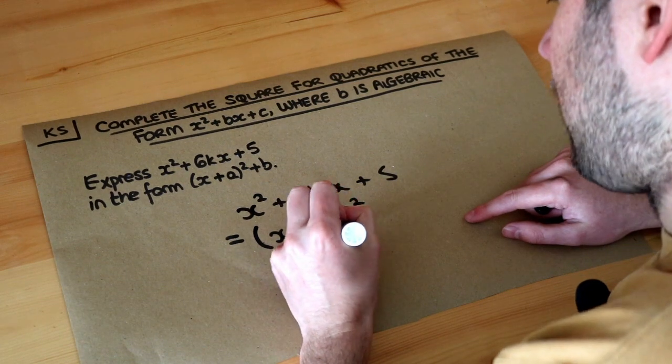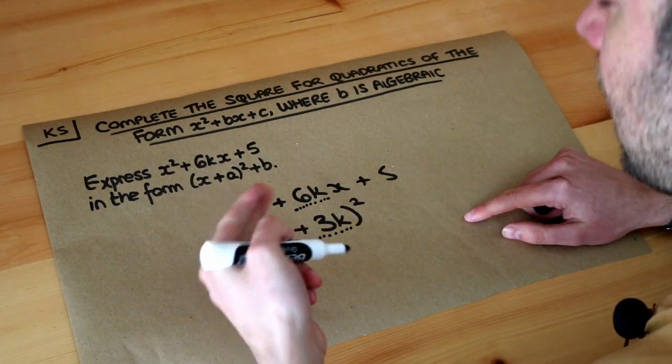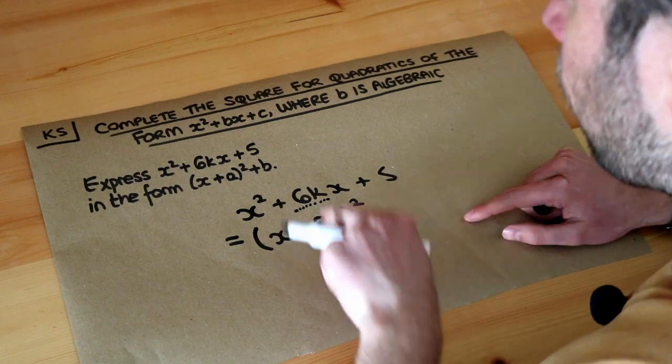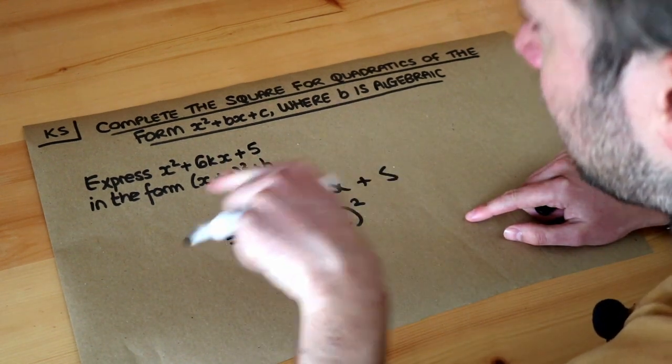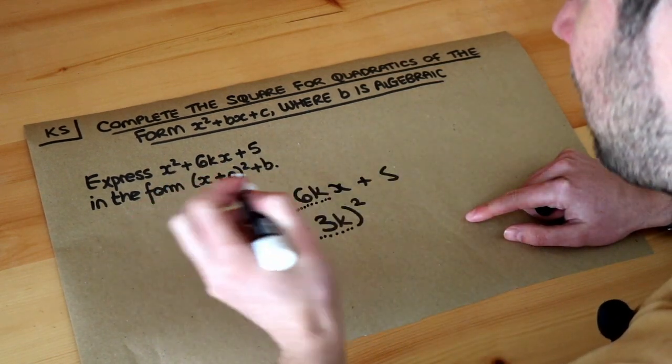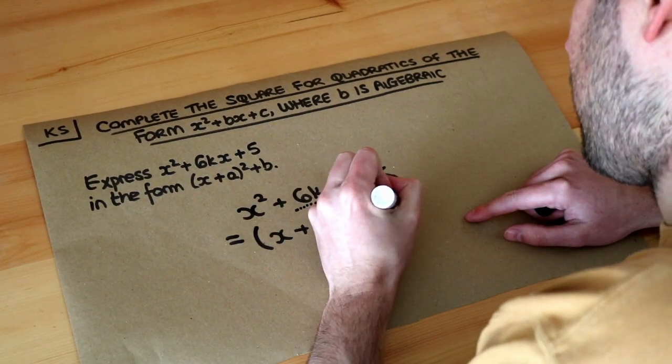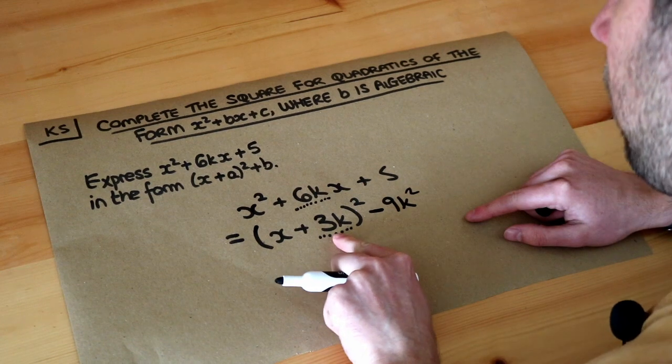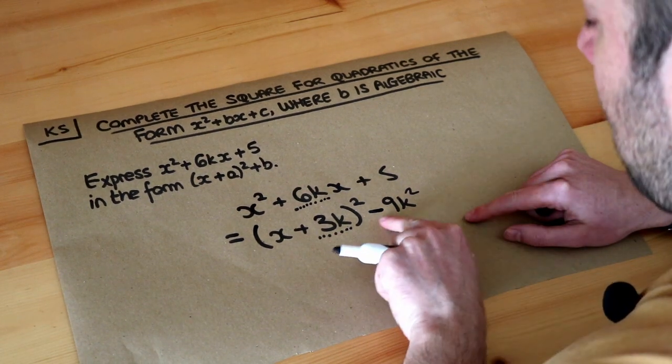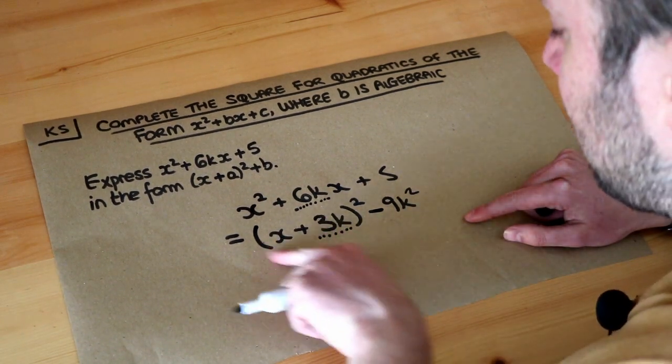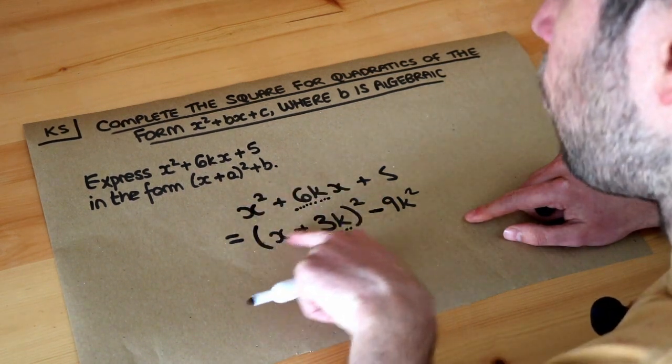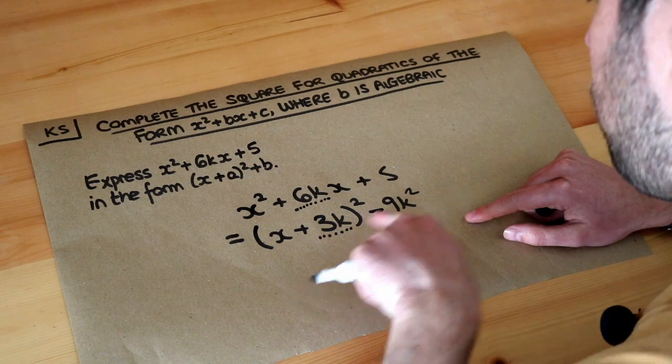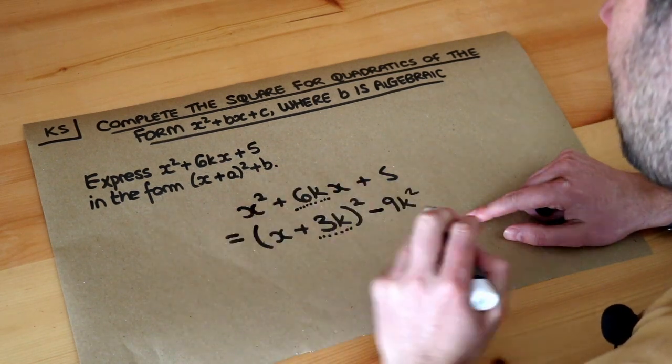Now we square this 3k term and subtract it: 3k squared equals 9k². The reason for subtracting 9k² is that when we expand (x + 3k)², it gives us x² + 6kx, which we want, but it also gives us 9k², which we don't want. So we subtract 9k² to eliminate it.